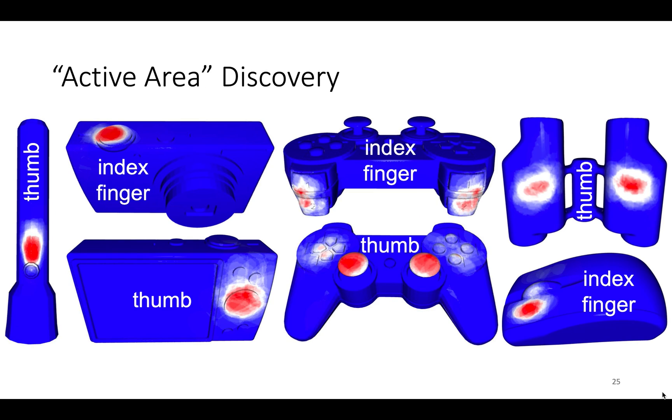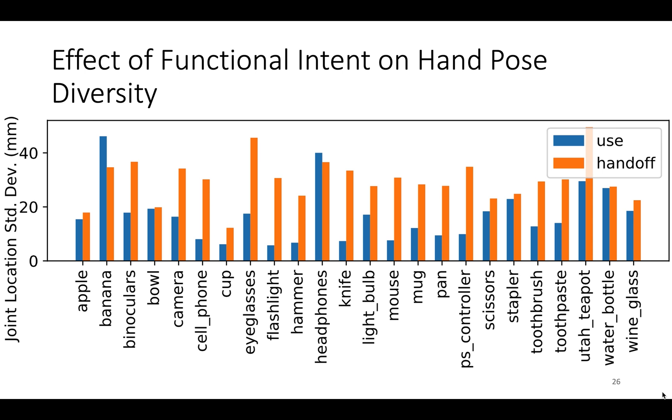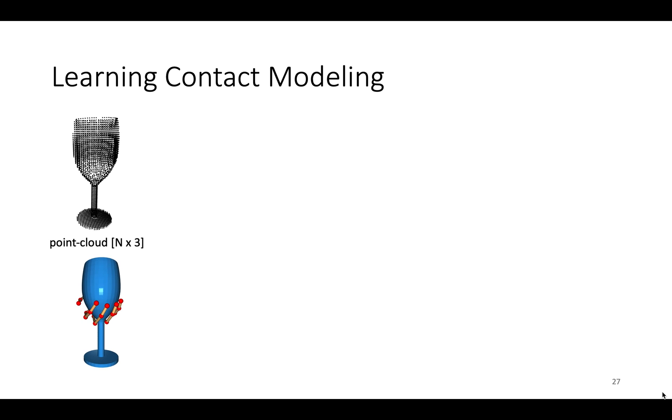We discovered active areas on objects by integrating the probability of being contacted by a specific part of the hand over the entire dataset. We also measured the diversity of the hand pose in terms of the variance of 3D joint locations after accounting for object symmetry. We see that use grasps are much more constrained than handoff grasps, which intuitively makes sense.